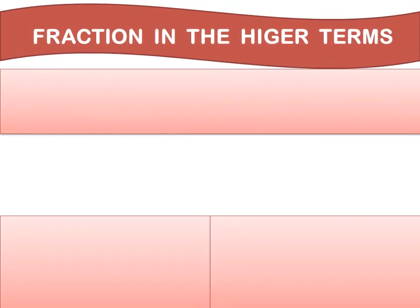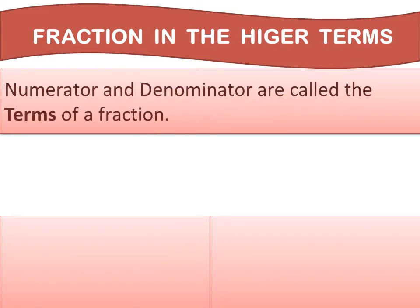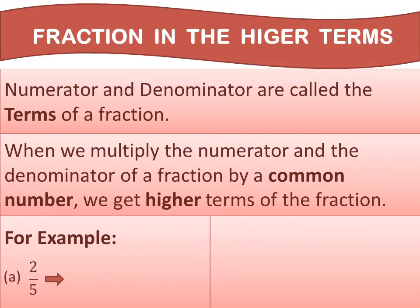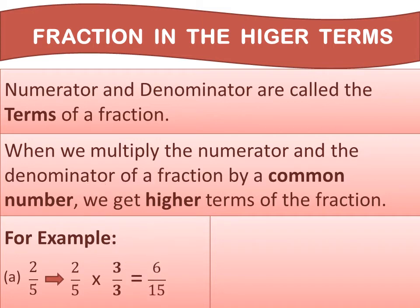The next topic is fraction in higher terms. The numerator and denominator are called the terms of a fraction. When we multiply the numerator and denominator of a fraction by a common number, we get the higher terms of the fraction. For example, 2 upon 5: if we take 3 as the common number, we multiply and get 6 upon 15. So, 6 upon 15 is a higher term of 2 upon 5.